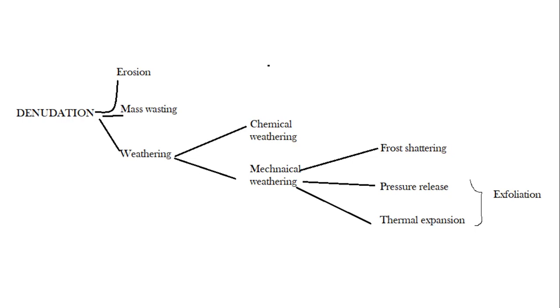With pressure release and thermal expansion, when the rocks break up they usually break off layer by layer. We use the term exfoliation to describe this way in which the rocks break off or peel off layer by layer. We call it onion peeling.